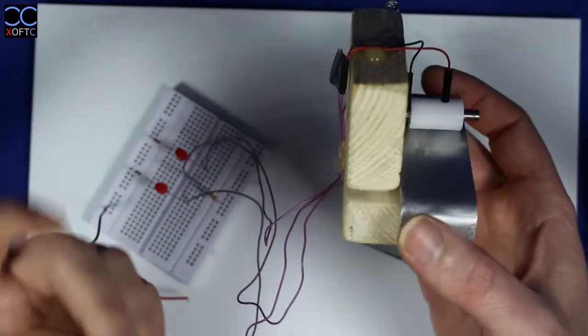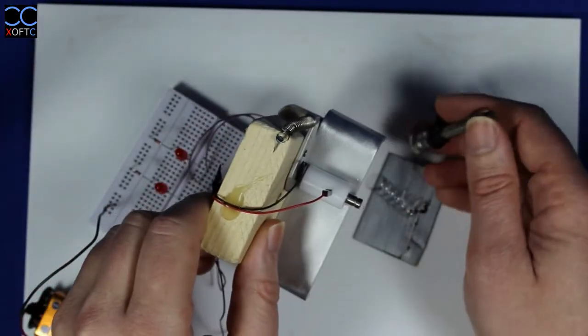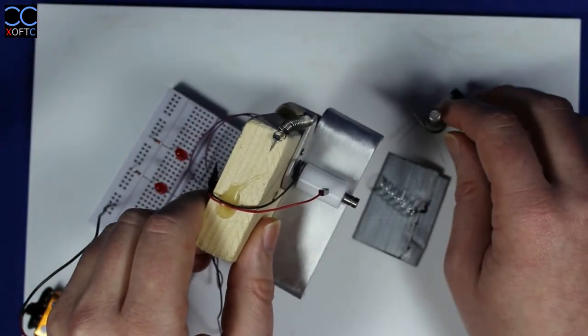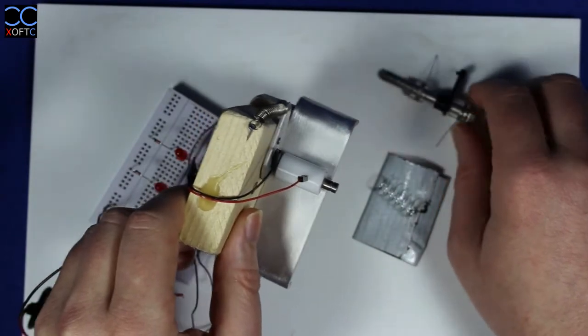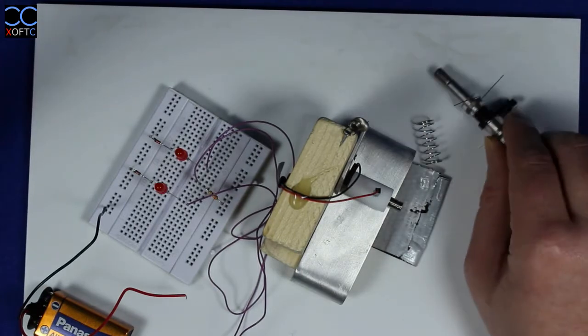That's about it. Hot glued everything and I have my punch card reader. I have a plan on building a computer in the future so I'm going to try and use this. I'm going to add three more bits to make a 4-bit reader.